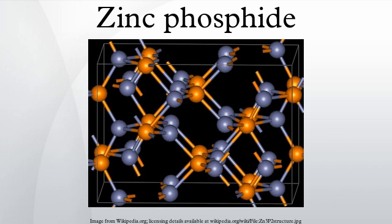ZN3P2 has two forms: a room temperature tetragonal form which converts to a cubic form at around 845 degrees Celsius. In the room temperature form there are discrete P atoms; zinc atoms are tetrahedrally coordinated and phosphorus is 6-coordinate, with zinc atoms at 6 of the vertices of a distorted cube.